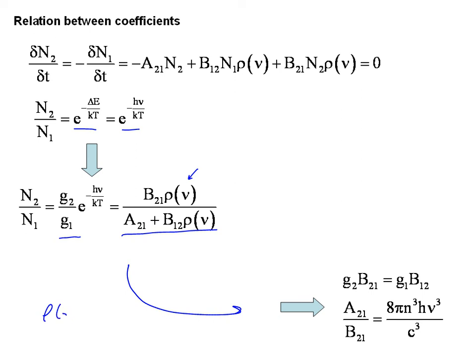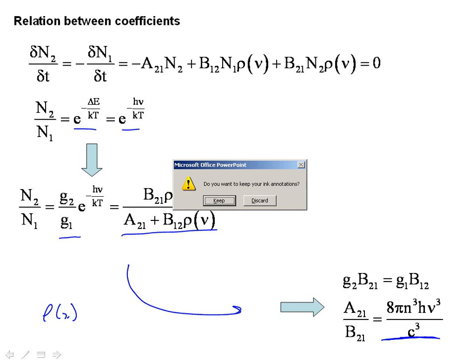So you go in, you put in rho of nu from the black body, and it turns out that B21 and B12 are simply related by the degeneracies, and we can calculate the ratio of the A and B Einstein coefficients, and we come up with this expression right here. And we'll be using this in our class many times to actually calculate the rate equations for a laser. I apologize. This was kind of long, but we had a lot to get to today. Thank you.